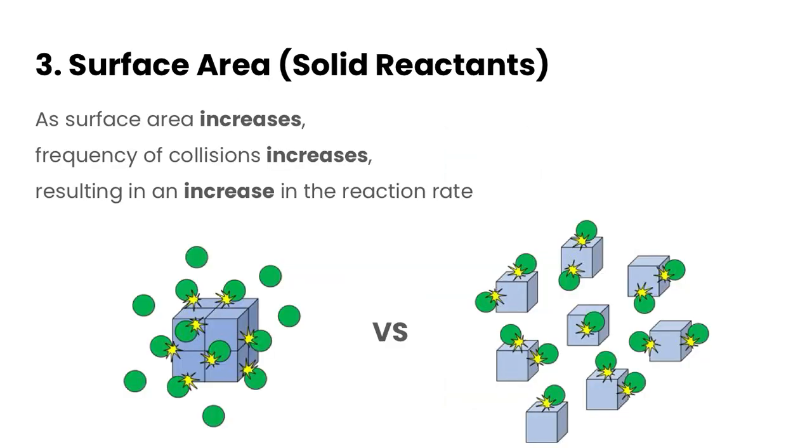The next factor that affects rates of reaction is the surface area, and this is pretty much just for solid reactants. Generally, as surface area increases, the frequency of collisions will also increase, and that's going to result in an increase of reaction rate.